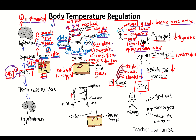Next, the erector muscle relaxes and the skin hair is lowered and flattened — less heat is trapped, because now you are hot. Next, thyroid glands release less thyroxine. Adrenal glands release less adrenaline, and metabolic rate becomes low. Less heat is generated.